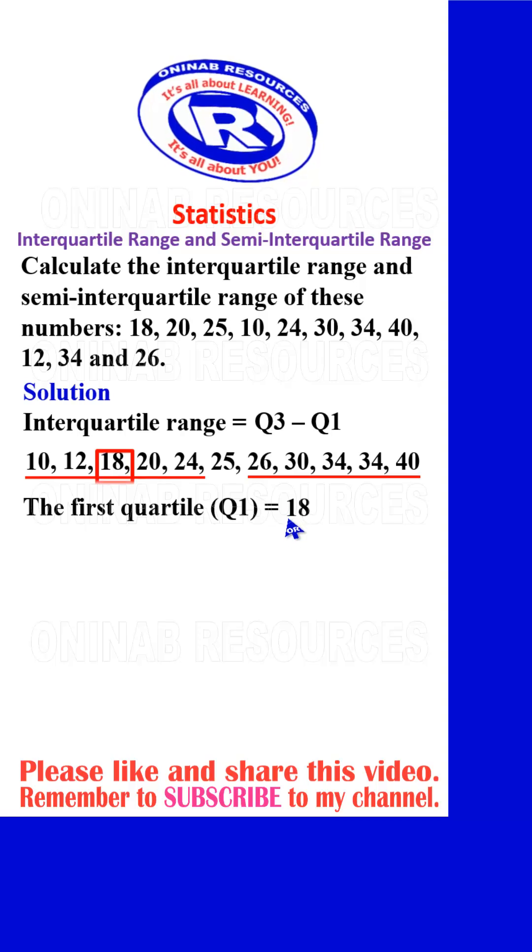We then go for the third quartile. Also, the last five numbers will be considered, and then we pick the middle number from there too. We have 34 in the middle, that gives our third quartile to be 34.